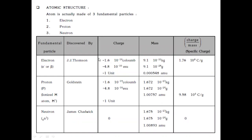In Structure of Atom, first we have to know what are the subatomic particles present in an atom. Those are electrons, protons, as well as neutrons. Electrons are discovered by J.J. Thomson and its charge will be negative. The mass of electron is 9.1 × 10⁻³¹ kg or 9.1 × 10⁻²⁸ grams, and in terms of atomic mass unit it is 0.000548 amu, and its charge-per-mass ratio is 1.76 × 10⁸ coulombs per gram.